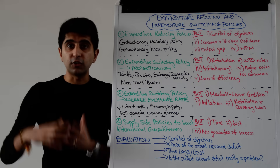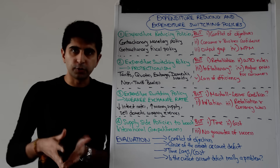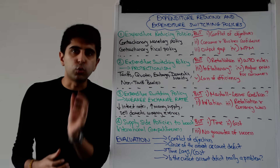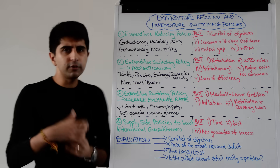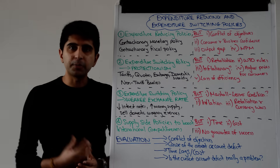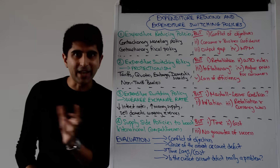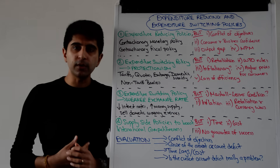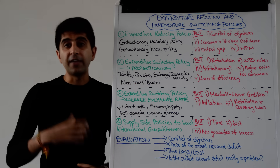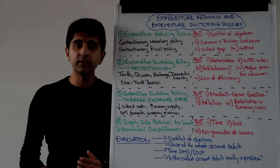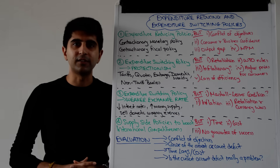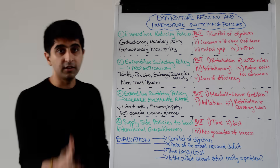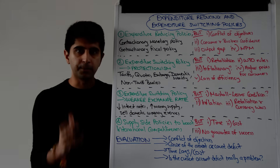Maybe another expenditure switching policy can be used instead — to switch spending away from buying imports towards buying domestic goods. Another expenditure switching policy could be to weaken the exchange rate. A weak exchange rate means imports become more expensive and exports become cheaper. With more expensive imports, demand for imports will decrease and expenditure on imports will decrease. If exports are cheaper, demand for exports will increase and therefore revenues generated from exports will increase, helping to improve the trade position and the current account.